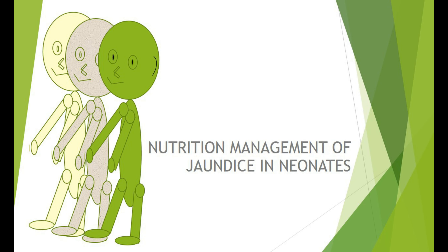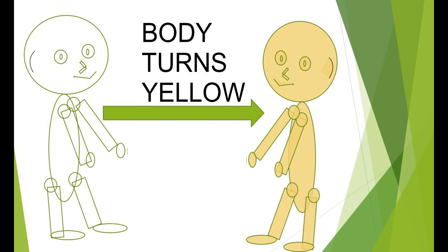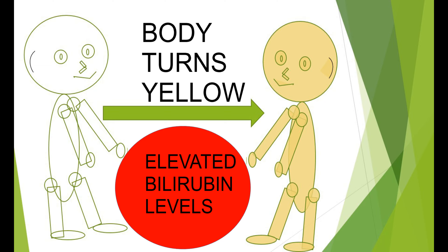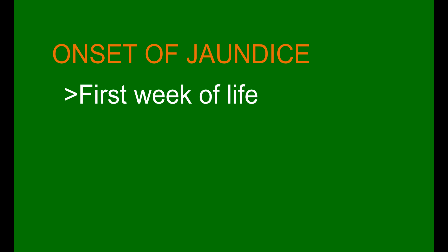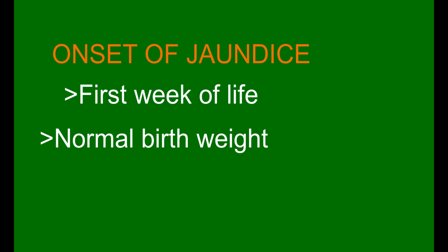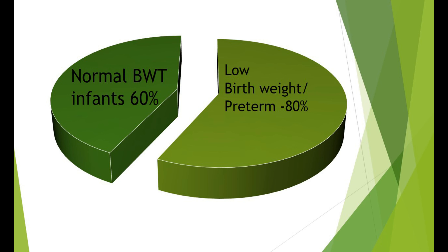Neonatal care: nutrition management of jaundice in neonates. Neonatal jaundice is a condition characterized by body yellowing due to elevated serum bilirubin levels. Old red blood cells break down releasing bilirubin, which is a yellowing pigmentation. The onset is generally within the first week of the infant's life and generally affects both normal birth weight and low birth weight infants. Low birth weight and preterm babies are at a higher risk of jaundice compared to normal birth weight term babies.